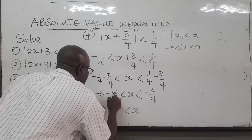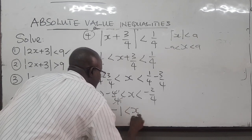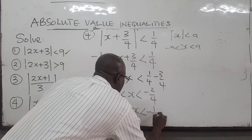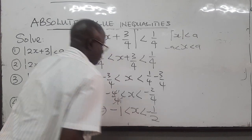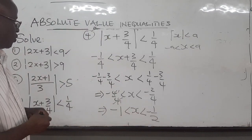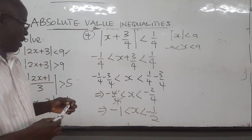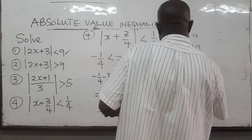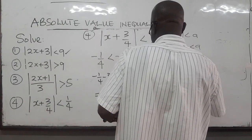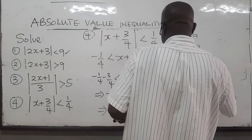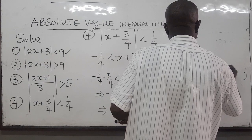The right side gives us negative 2 over 4, which simplifies to negative 1 over 2. So finally we get x lies between negative 1 and negative 1 over 2. That is the solution.